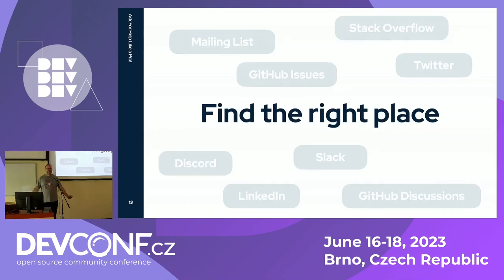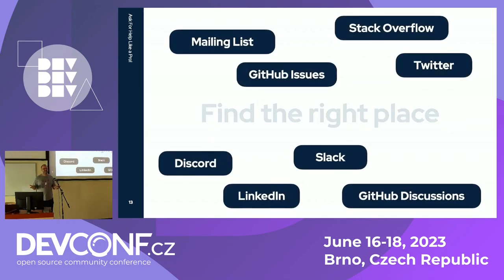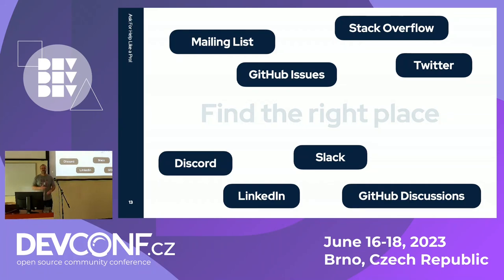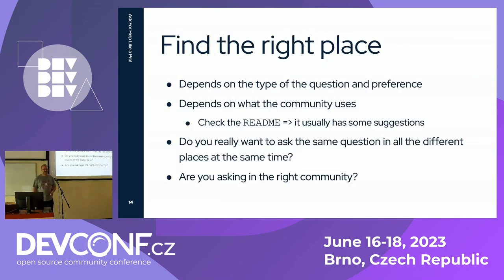So you tried to help yourself first but didn't find the answer — you have to ask. The first thing is finding the right place, because there are quite often many different places where you can ask: mailing lists, Stack Overflow, GitHub issues, Slack, Discord, GitHub discussions, LinkedIn, and all these different places. Some people even try to ask for help via DMs on Twitter. But there are always many options and you should try to find the right one.